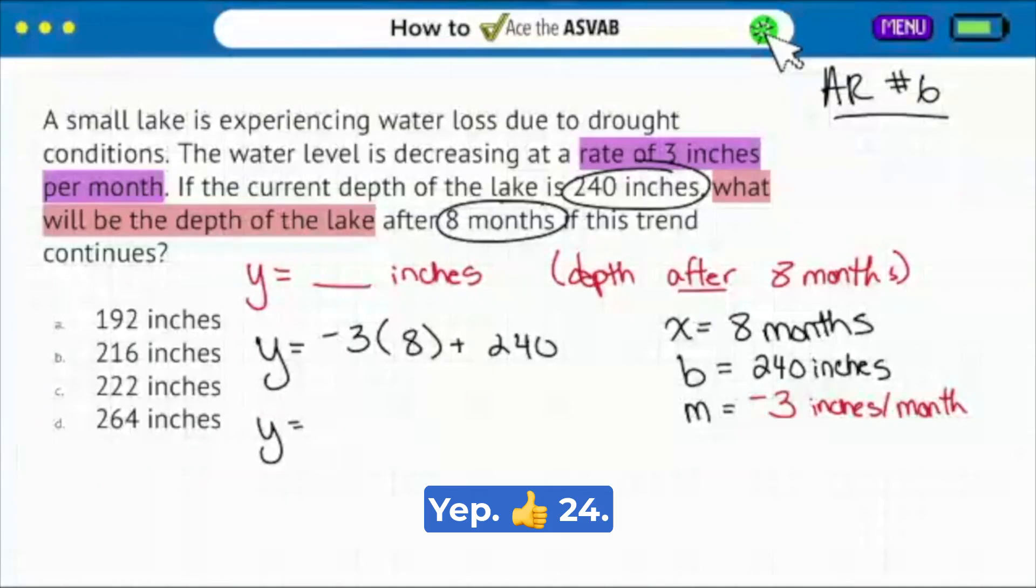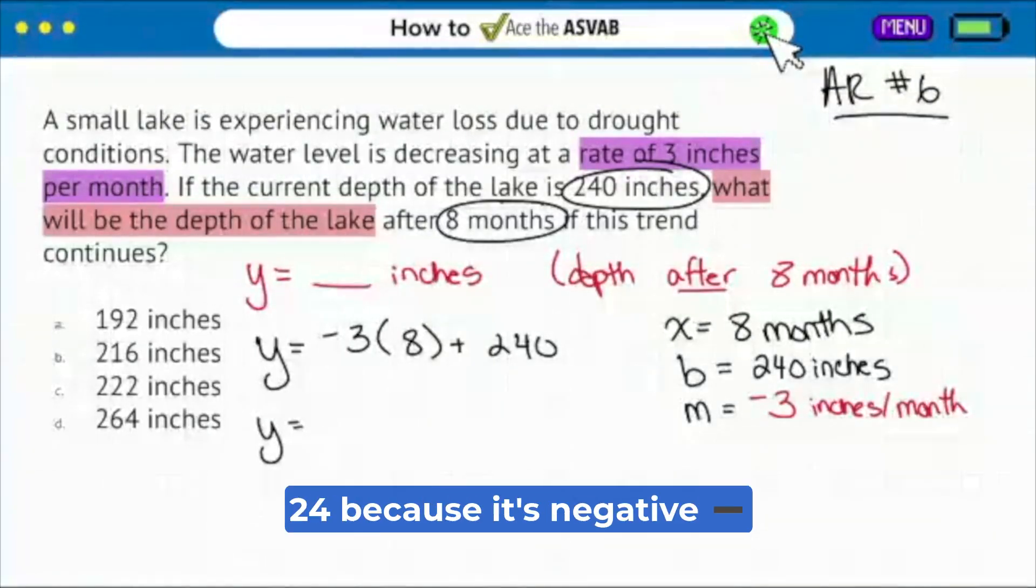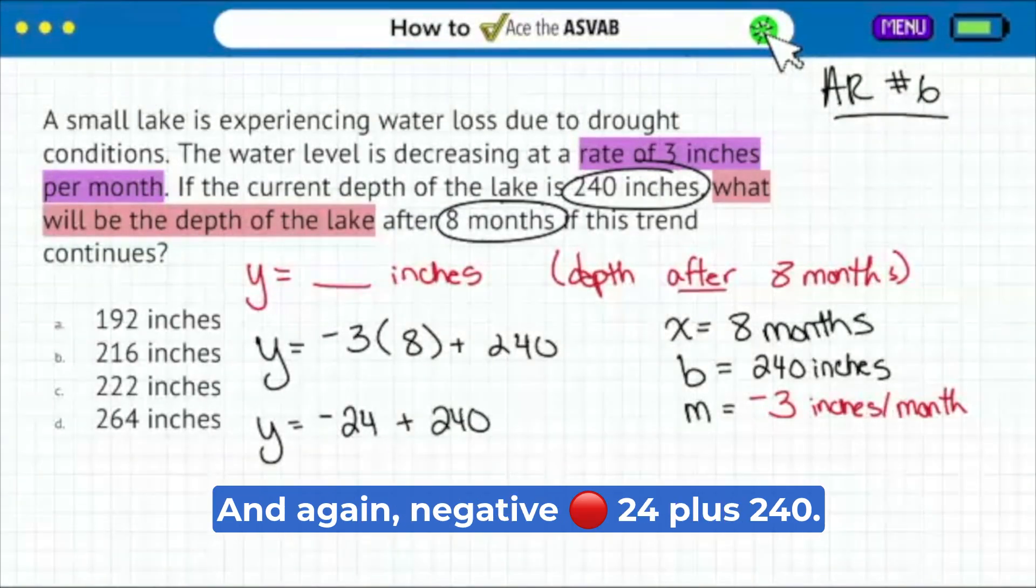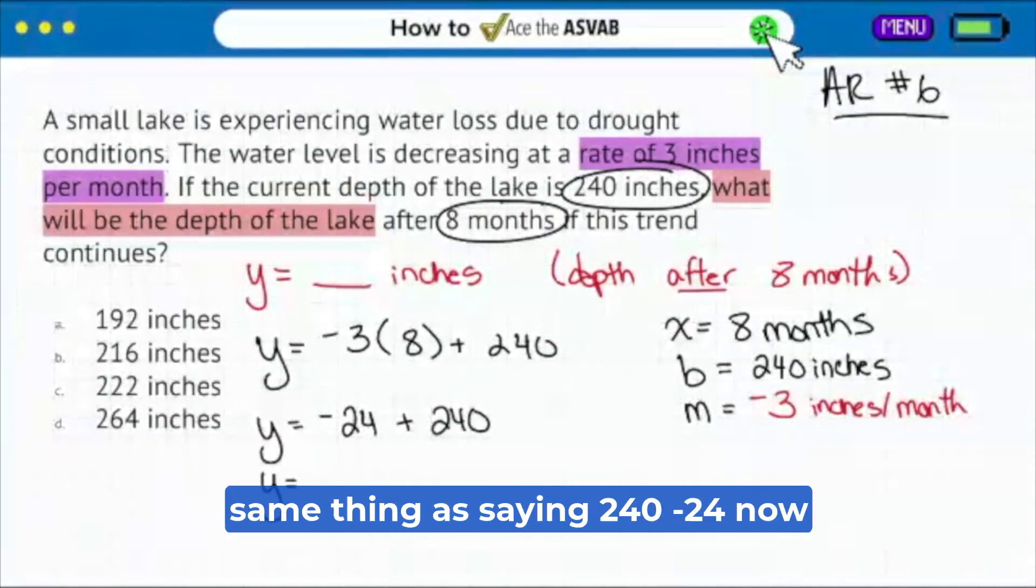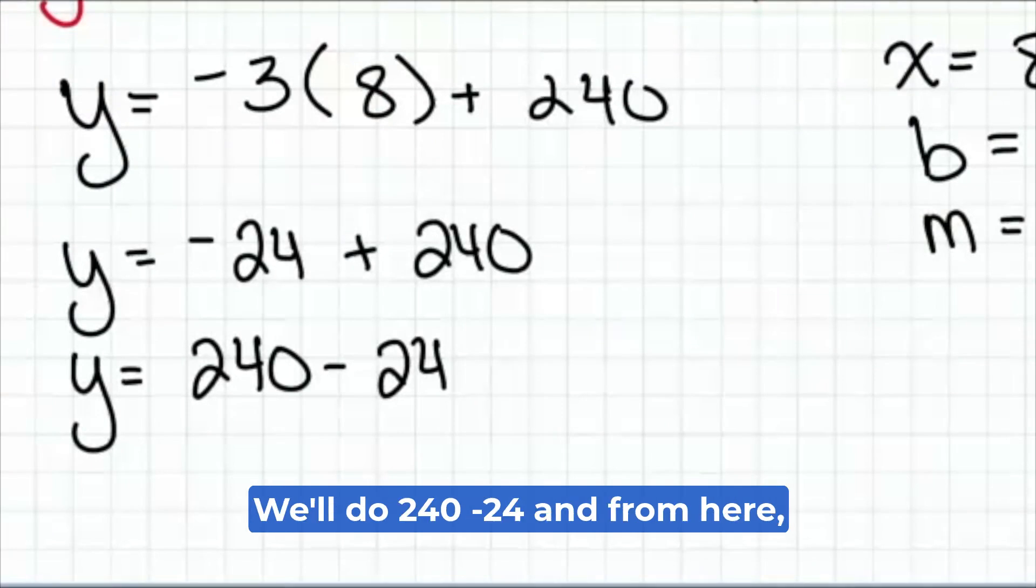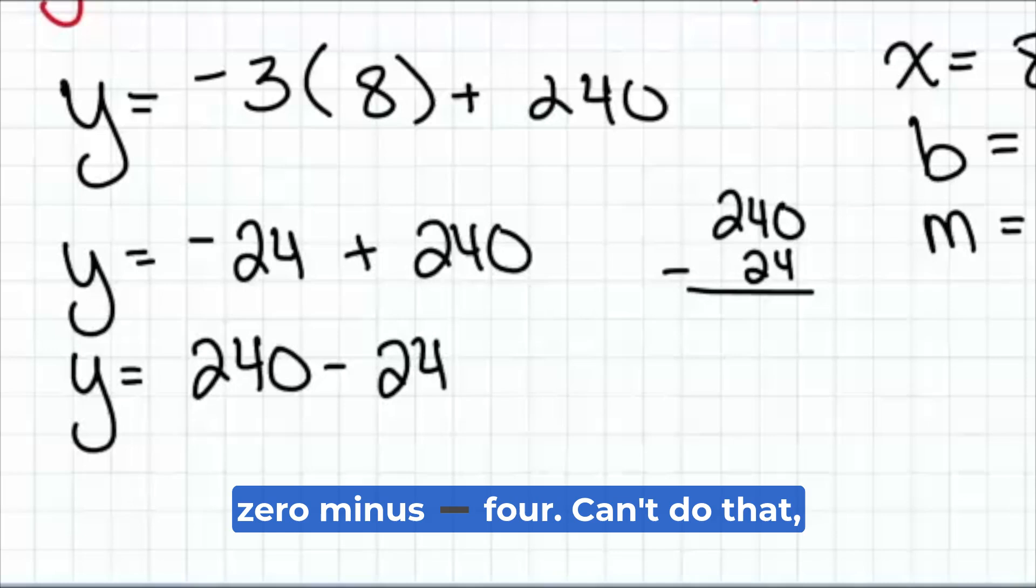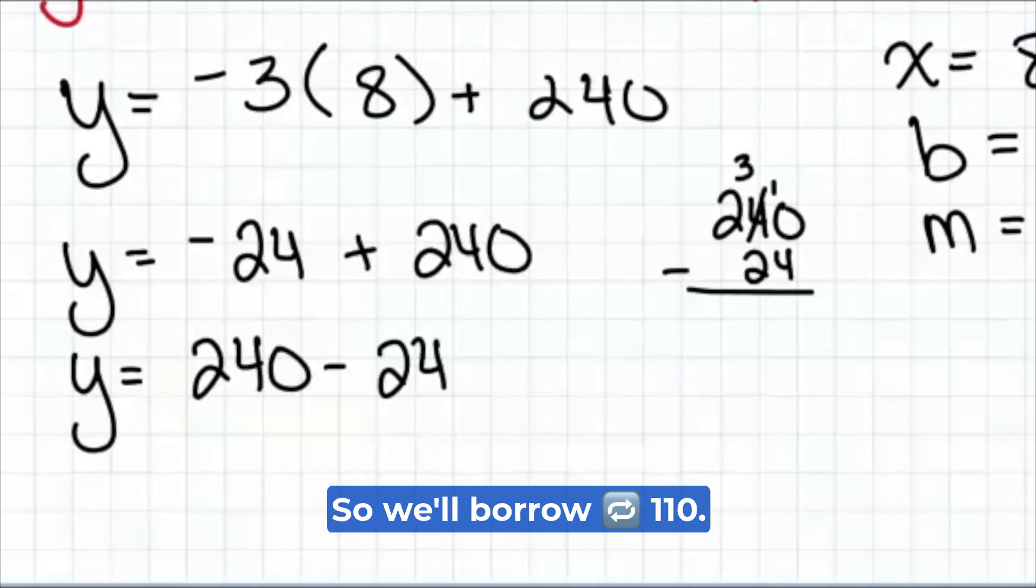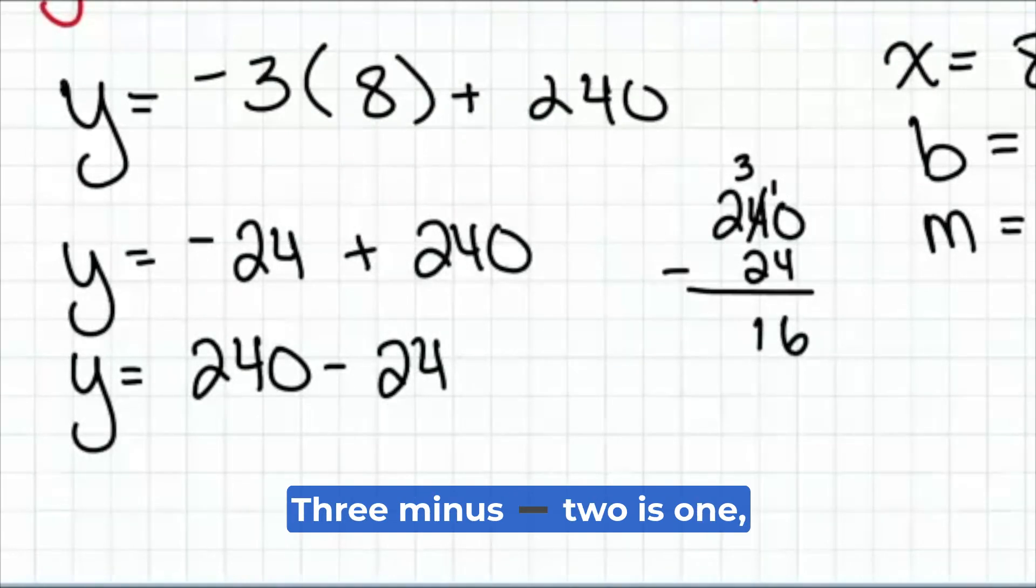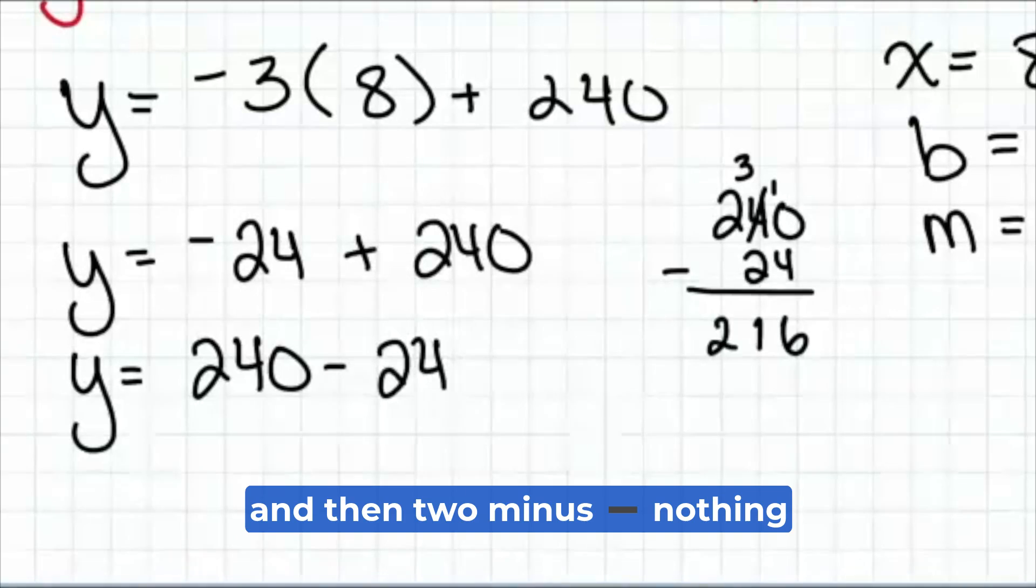Everybody, what's three times eight? Yep, 24. But it's going to be a negative 24 because it's negative three times eight. And then we're adding 240. And again, negative 24 plus 240, we can actually make that easier for ourselves because it's the same thing as saying 240 minus 24. Now that we're here, we'll do 240 minus 24. Zero minus four can't do that unfortunately, so we'll borrow one. 10 minus four is going to be six. Three minus two is one. And then two minus nothing is two.